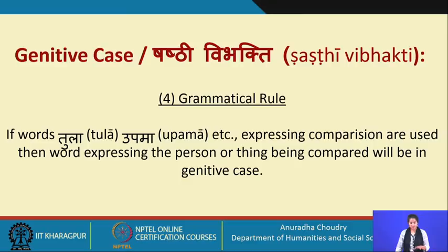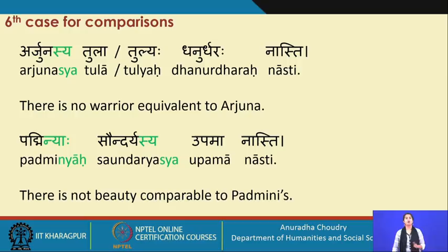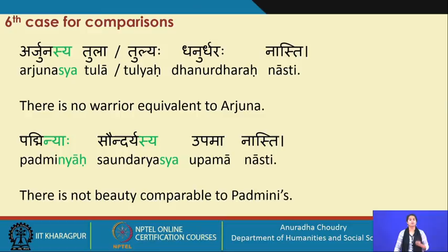The fourth grammatical rule: if the words tula or upama are used to express a comparison, the word expressing the person or thing being compared will be in the genitive case. For example: arjunasya tula dhanurdharaha naasthi — there is no warrior equivalent to Arjuna. In the feminine: padminyaah saundaryasya upama naasthi — there is no beauty comparable to Padmini's.